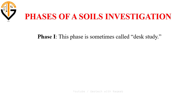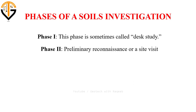The second step is to carry out a site visit. A site visit generally provides a general picture of the topography and geology of the site. It is necessary to take all the information gathered in phase one to compare with the current conditions of the site. Site visit notes should include photographs of the site and its neighborhood, and information on access to the site for workers and equipment.